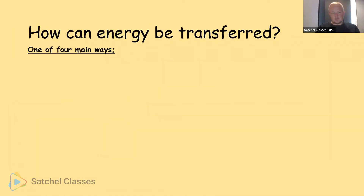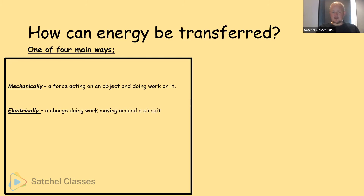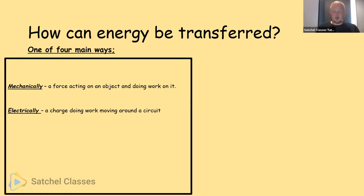Energy can be transferred in one of four main ways. Mechanically — if you push someone and they fall over, you've applied a force and done work on that object. Electrically — electricity flows through wires via the movement of electrons, which are charged particles, so electrical energy is a charge doing work moving around a circuit.